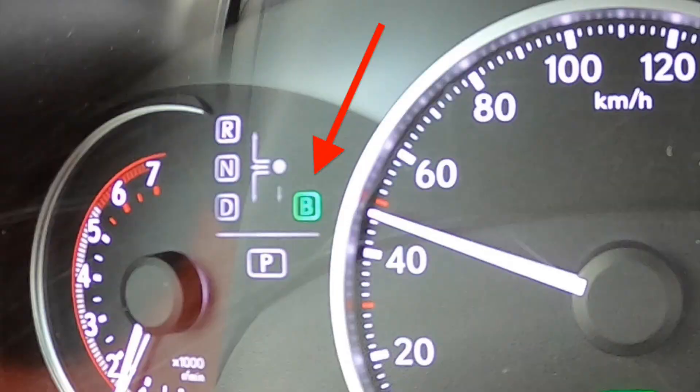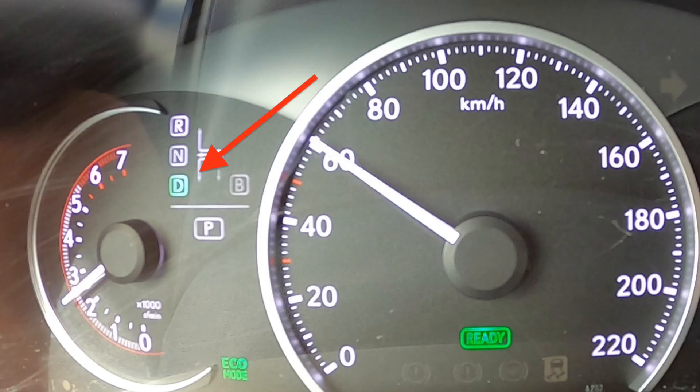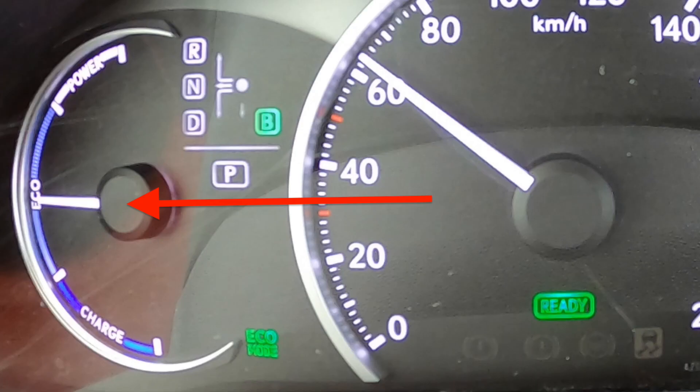Left of the speedometer, we can see which drive mode we are in. Either B for engine braking or D for driving. On the left hand side is a very special gauge. It is either blue or red.